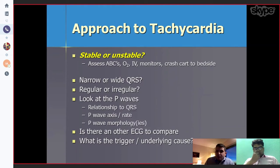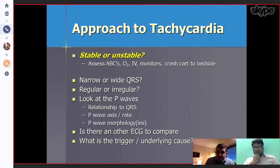How should we approach the tachycardia? The most important question is: is the patient stable or not? Look at the airway, breathing, and circulation parameters, get the monitor, and there should be a crash cart at the bedside. Then ask: is the QRS narrow or wide? Is it regular or irregular? And look at the P-wave.